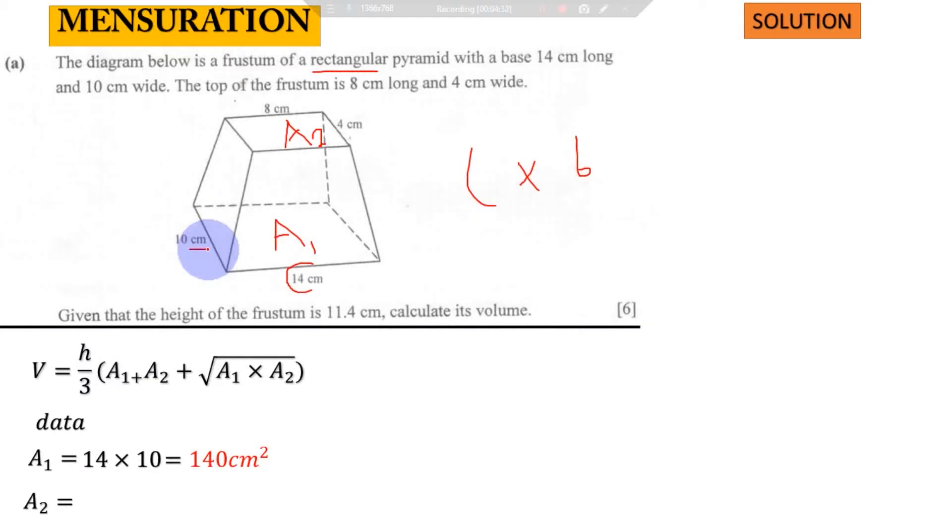Let us come to the area on top, area two. Here we have 8 multiplied by 4 centimeters. 8 times 4, what's the answer? 32. So here we have A₂ = 32 centimeter squared.